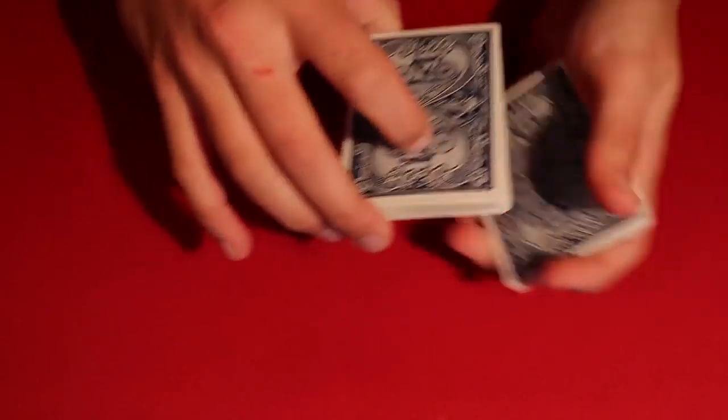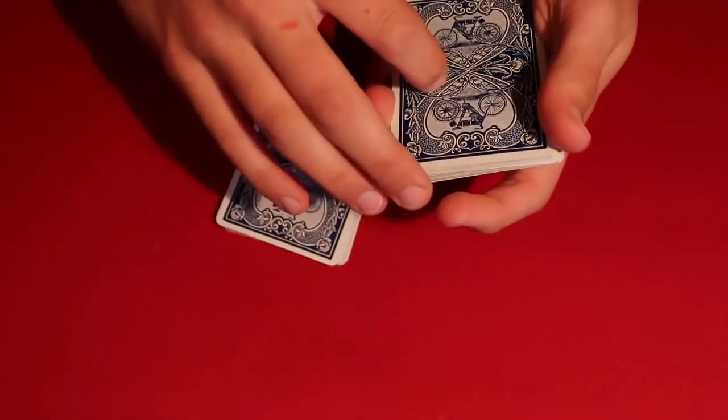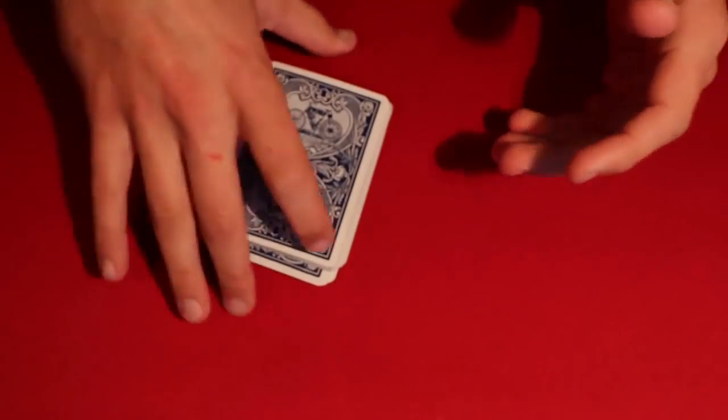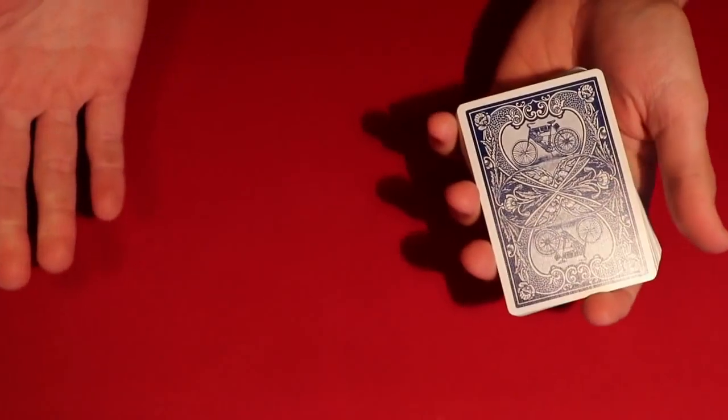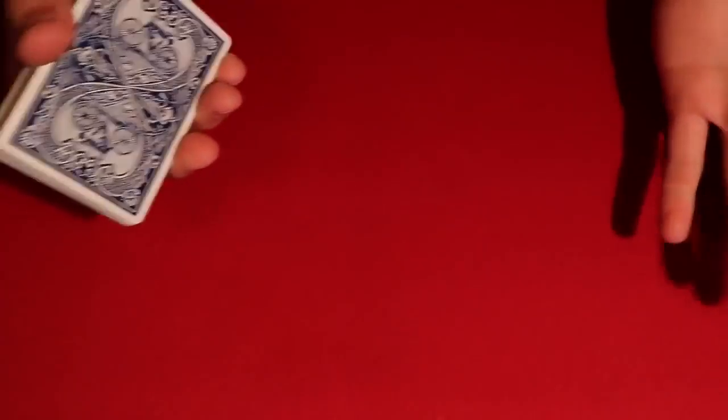Essentially, I would have the spectator tell me when to stop for another time. Let's say we go to the deck and they said stop right around here. All right, so after all this shuffling, you tell your spectator okay, I have no idea where your card is, I have no breaks.